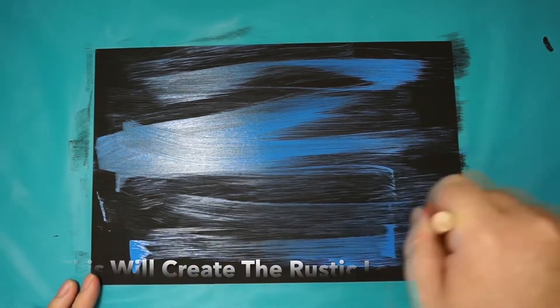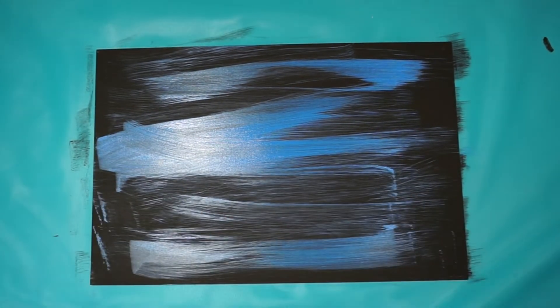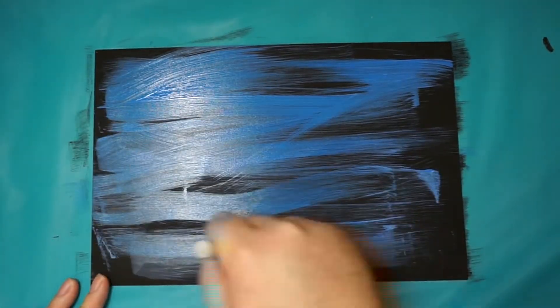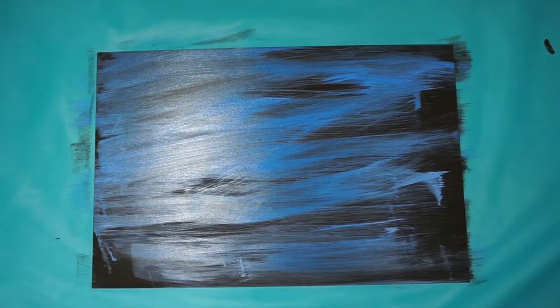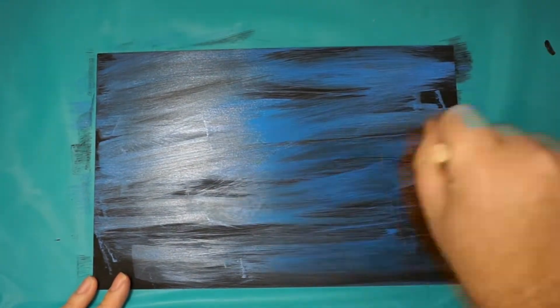We're going lightly across it to get a rustic look so the black pops out in the background. Don't try to color this all blue unless you really want to, but to give it that rustic look, just go gently across.